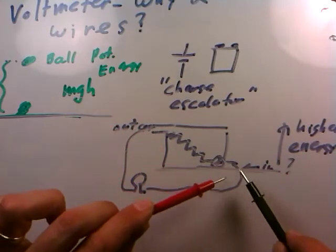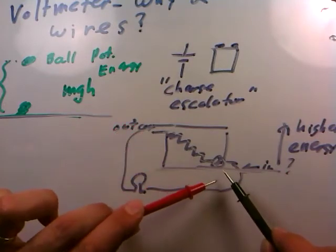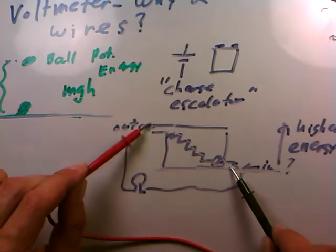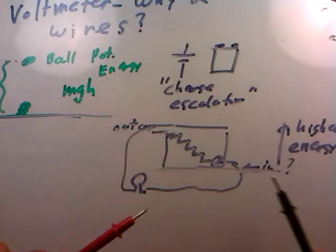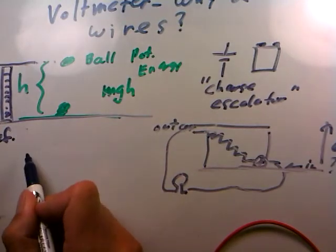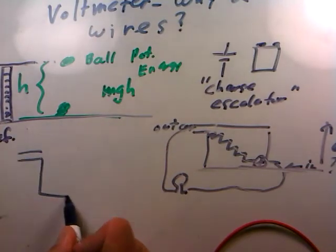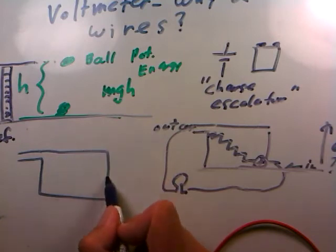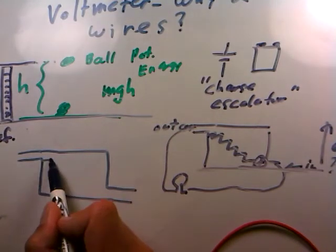Sometimes the charge escalator, the battery, is the case that always gives potential energy. The battery generally raises the potential of charges. But other things like resistors and light bulbs can actually lower the charge. So other devices could be a charge escalator just like this one is here, but it might be in the downward sense. Charge might lose potential energy when it enters the device.